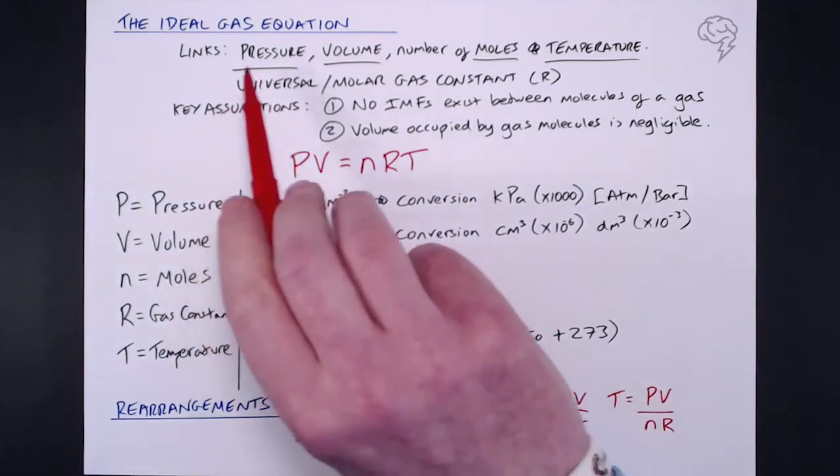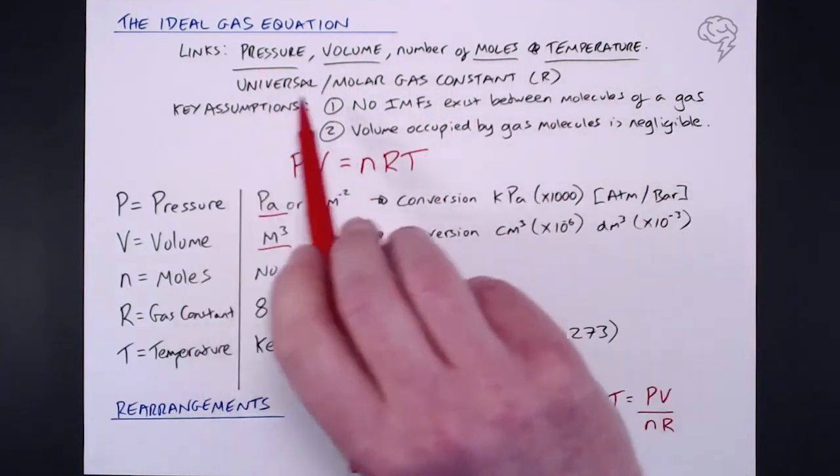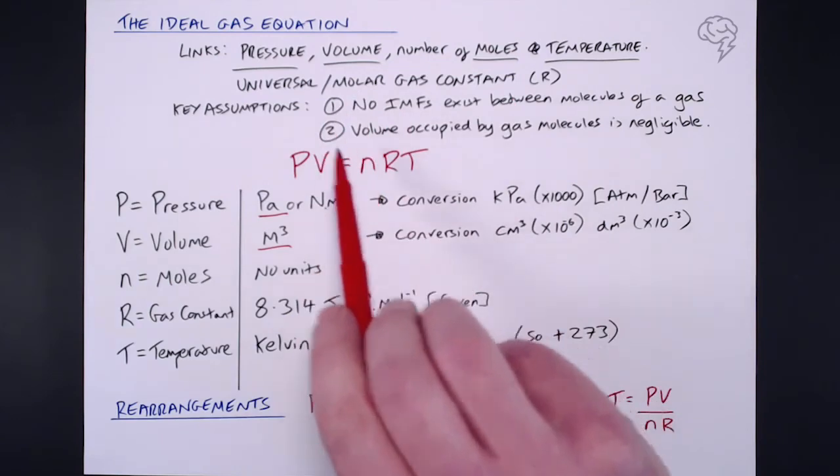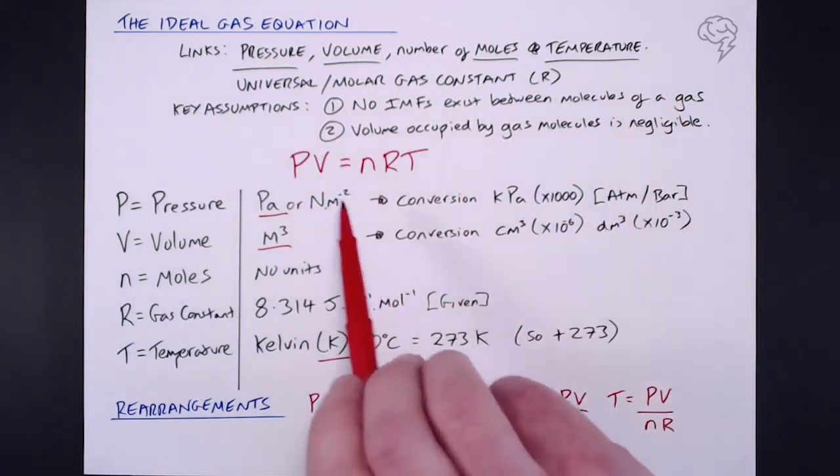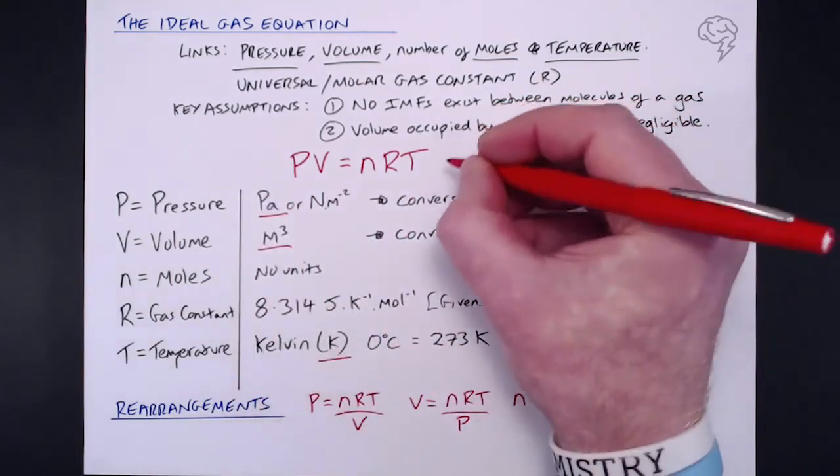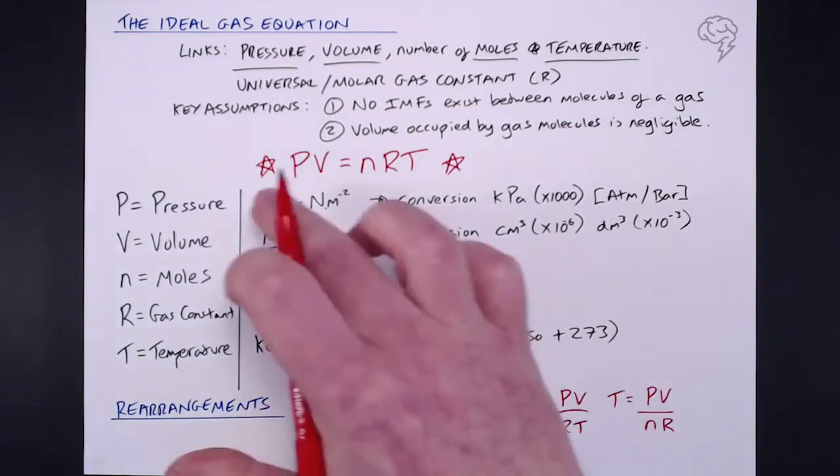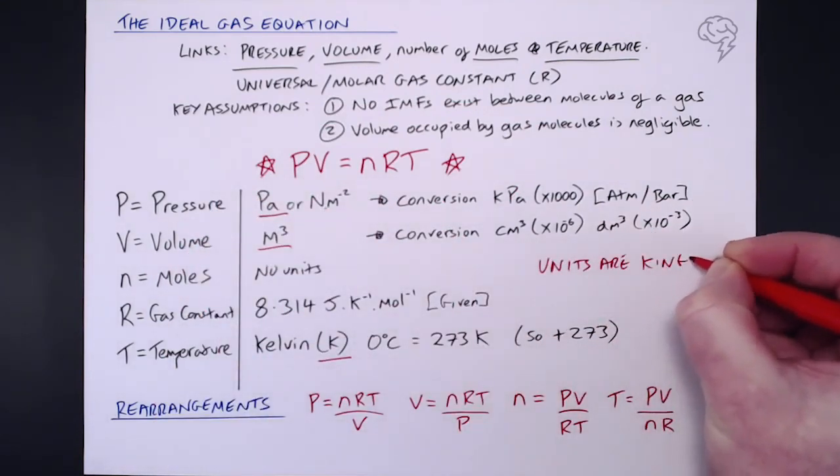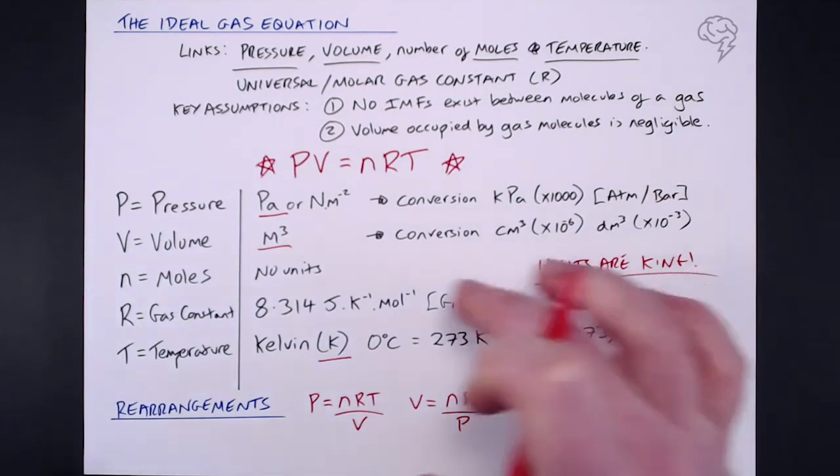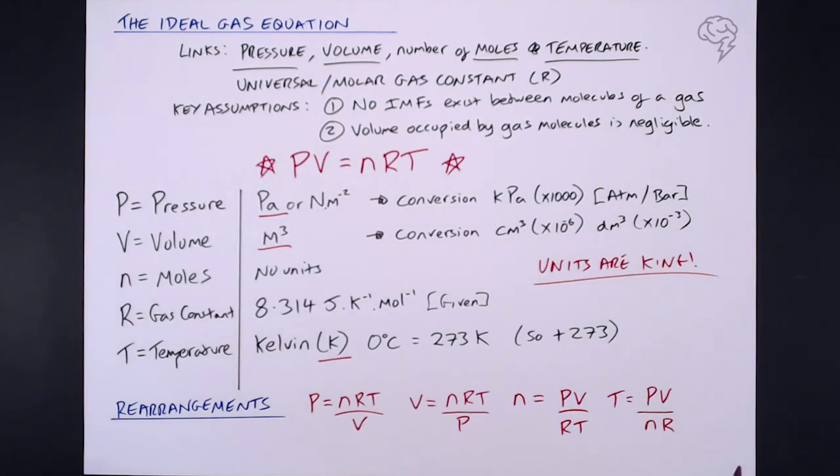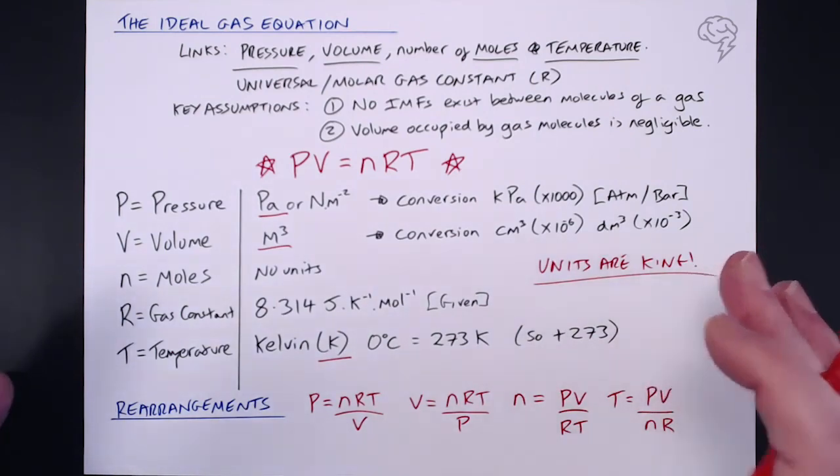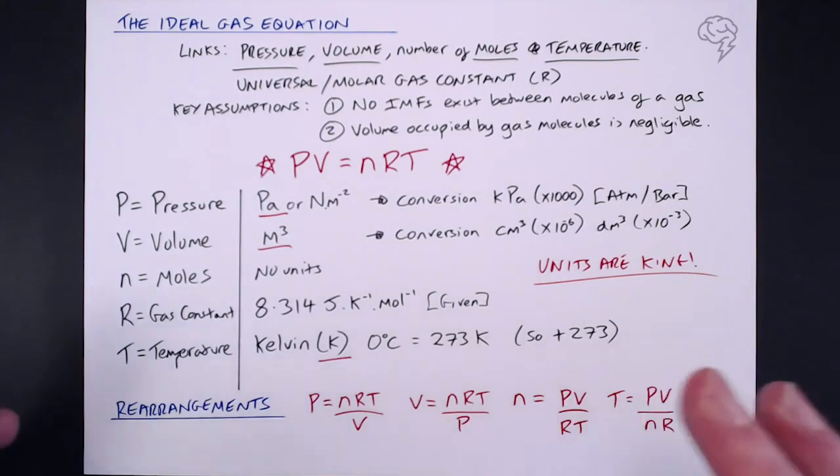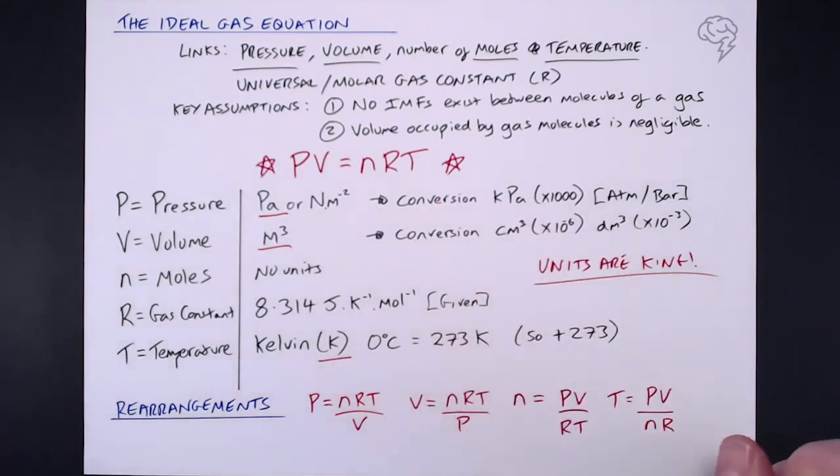So our ideal gas equation takes into account these four things, which can all affect each other, all linked by our universal gas constant. Be aware of these key assumptions, but I wouldn't learn them off by heart. But most importantly, you do need to remember this equation. And of course, your units are king. So you need to know your units and how to convert them from the other things that you might be given in the exam question. Of course, we need to be able to rearrange it as well. So don't be scared of this ideal gas equation. In another tutorial, I'll go through a couple of questions on how to spot the type of question where you'd be needing to use this equation. Thank you.